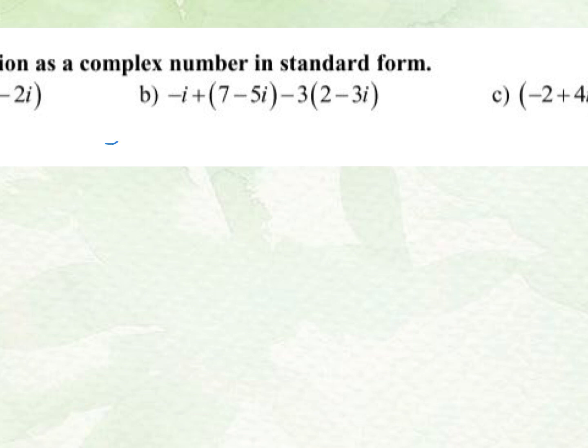I'm just going to rewrite the negative i. I'm going to take this 7, the plus 7 out. I'm going to pull the negative 5i out, and then I have an opportunity to distribute this negative 3 onto both of those terms. So that would turn into negative 6, and then negative 3 times negative 3i would be a positive 9i.